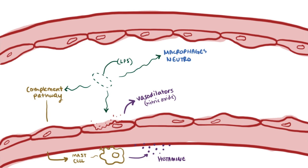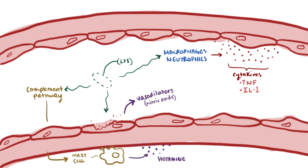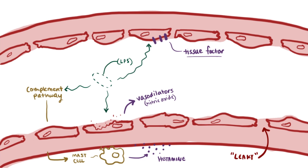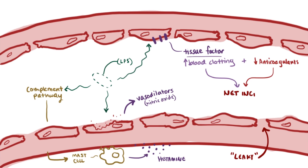LPS molecules also activate immune cells like macrophages and neutrophils, which produce pro-inflammatory cytokines like tumor necrosis factor and interleukin-1. These help the immune system destroy invaders but also stimulate endothelial cells to release more inflammatory molecules like platelet-activating factor and reactive oxygen species. These inflammatory chemicals damage endothelial cells and increase vascular permeability, making blood vessels leaky. Additionally, endothelial cells express a pro-coagulant called tissue factor, and with a decrease in anticoagulants during sepsis, there's a net increase in clotting in the microvasculature.